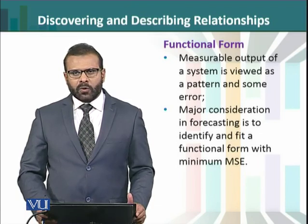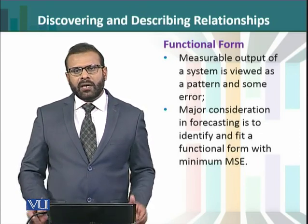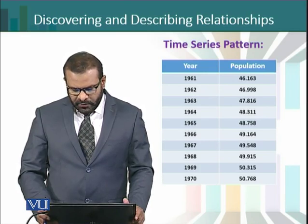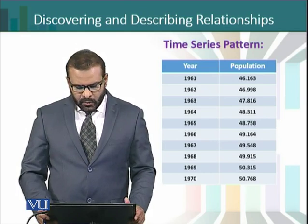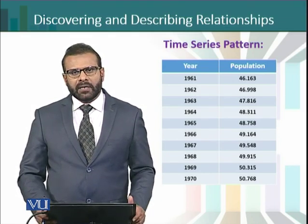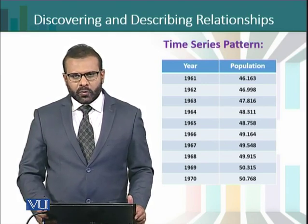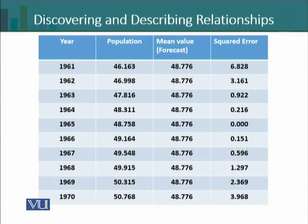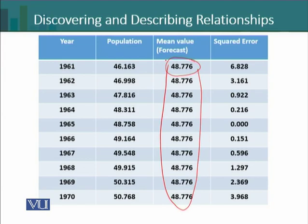We are trying to find some kind of function for which the mean square error is minimum. In this example, we have the population of a region recorded for 10 years. If we want some kind of estimate for this time series data, we can use a single mean value as an estimate for the entire dataset. The mean value is equal to 48.776, and we can use this single value as an estimate representing all the years.